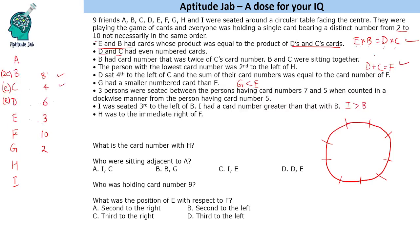We have now placed: G=2, E=3, C=4, A and H get 5 and 7 (to be determined), B=8, I>B=8 so I=9 (since F=10 is taken), and F=10. The remaining values 5 and 7 go to A and H, but we need more information from the arrangement to distinguish them — let us put that on hold for now.